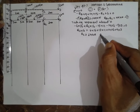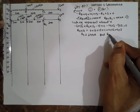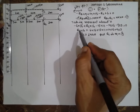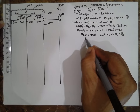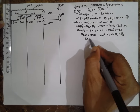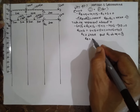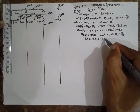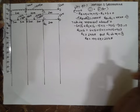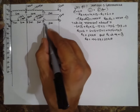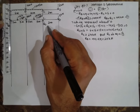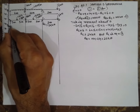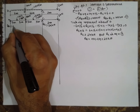Substituting RC into Equation 1: RA equals 44 minus 24, which is 20 kilonewton. So RC is 24 kN and RA is 20 kN.